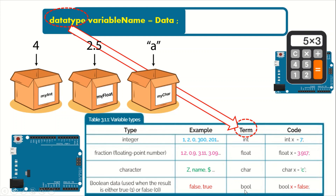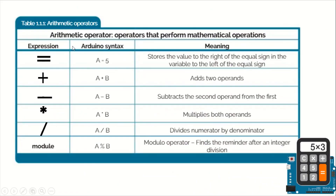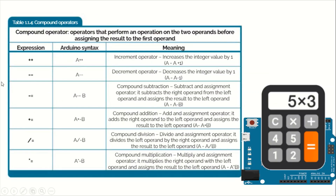Finally, if it's a Boolean data type, you define it using 'bool', then write the variable name, and the data can only be true or false — no other data. Now let me introduce you to arithmetic operators. Arithmetic operators perform mathematical operations: the equal sign, addition, subtraction, multiplication, division using the slash, and the percentage sign for modulo.